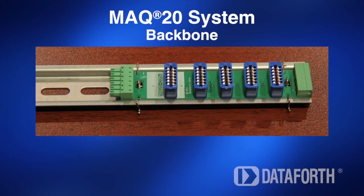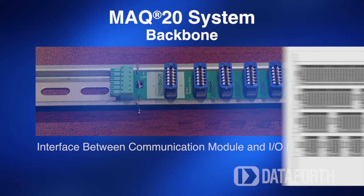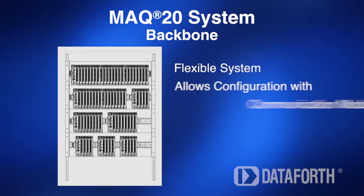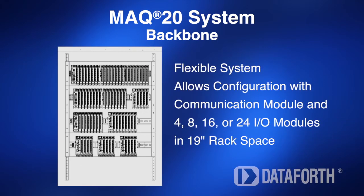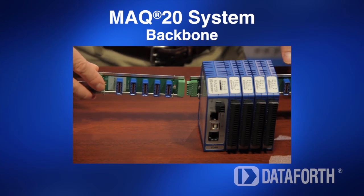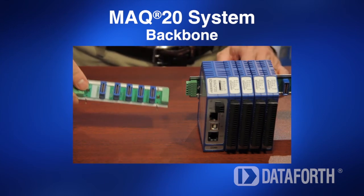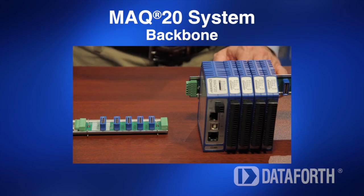The MAC20 system backbone resides within the DIN rail and provides power to and interface between the communication module and I/O modules. The backbones accommodate a communication module and 4, 8, 16, or 24 I/O modules. They also interconnect, allowing system flexibility and high channel density in a standard 19-inch rack space.